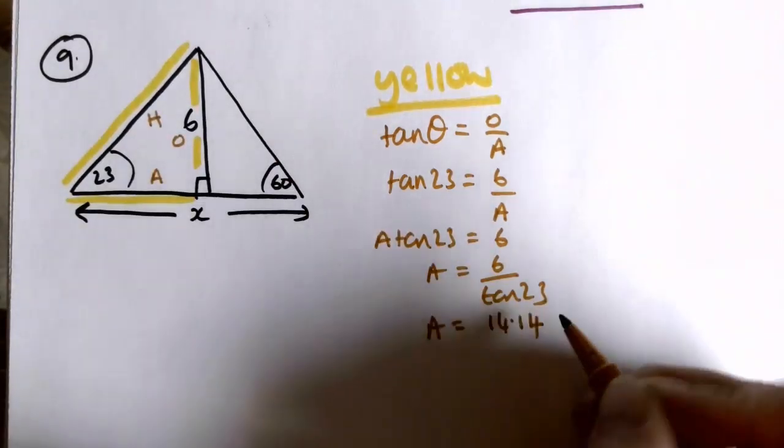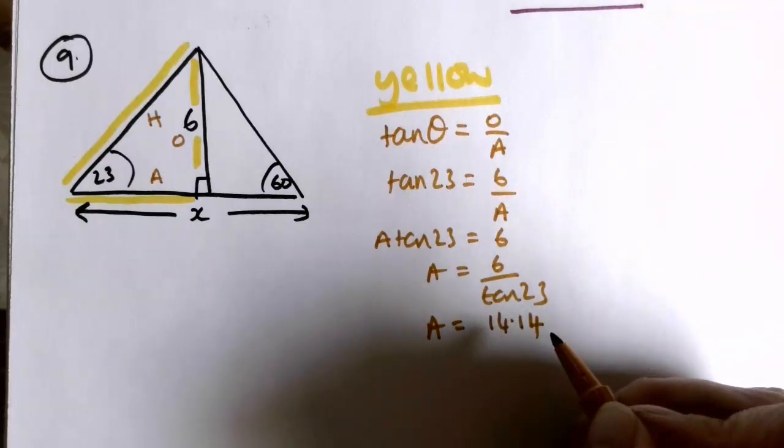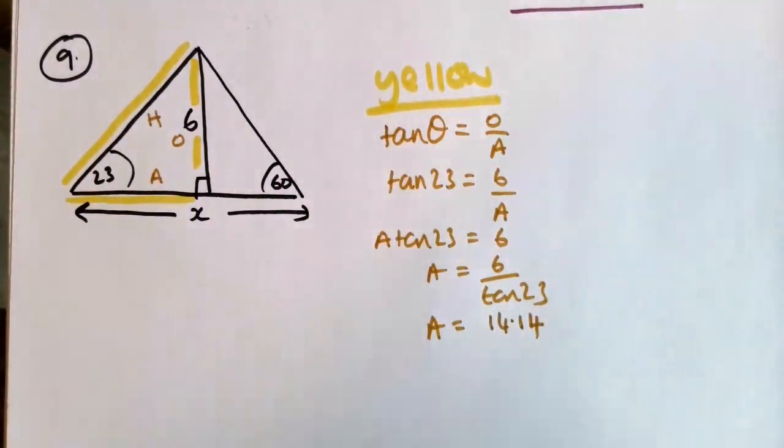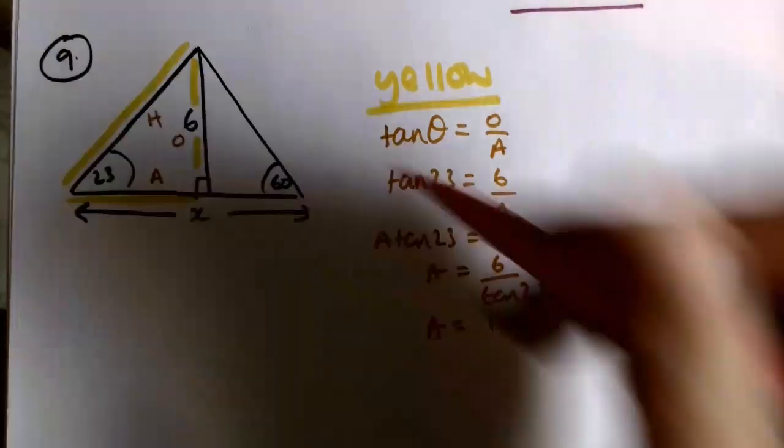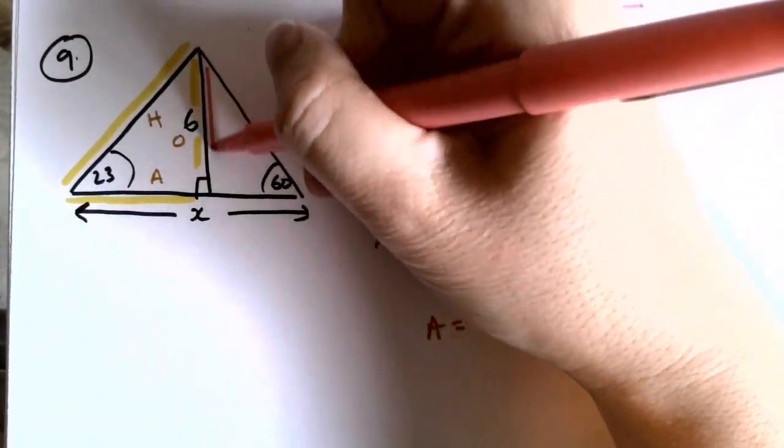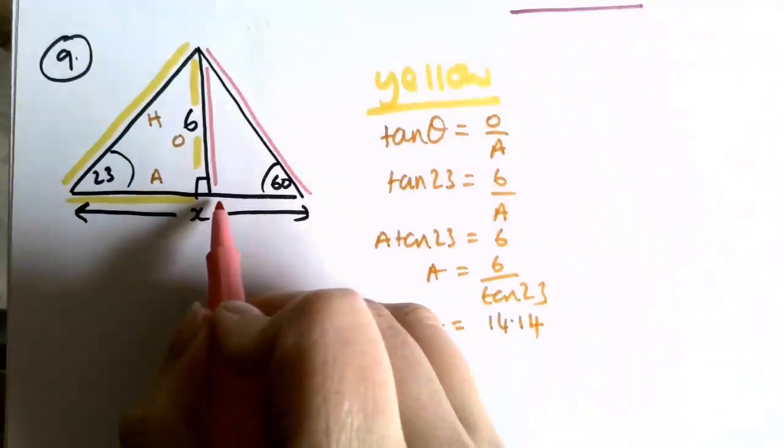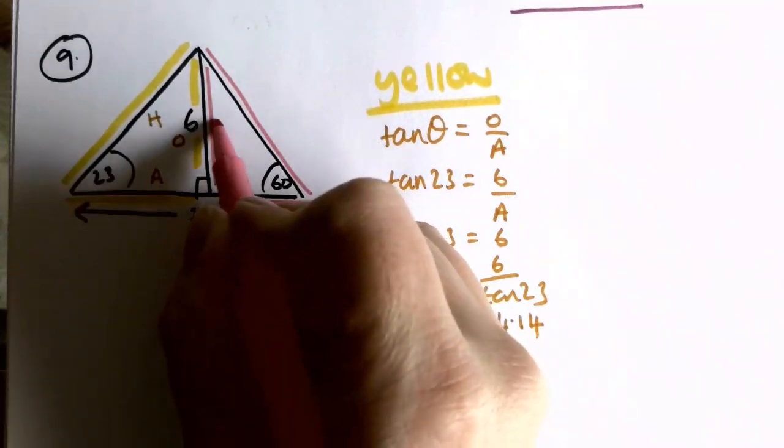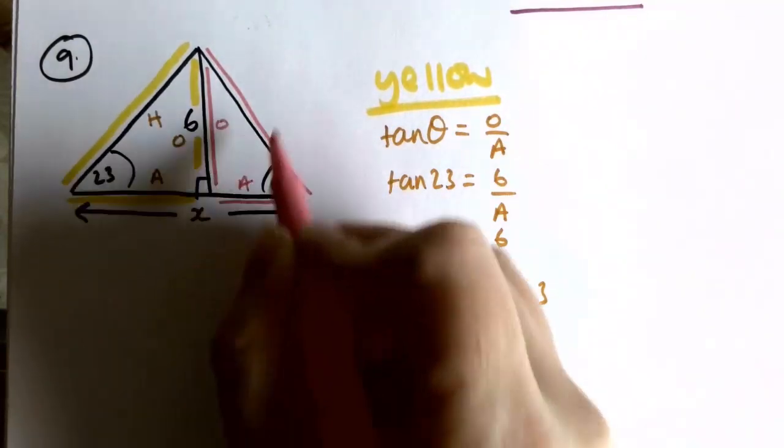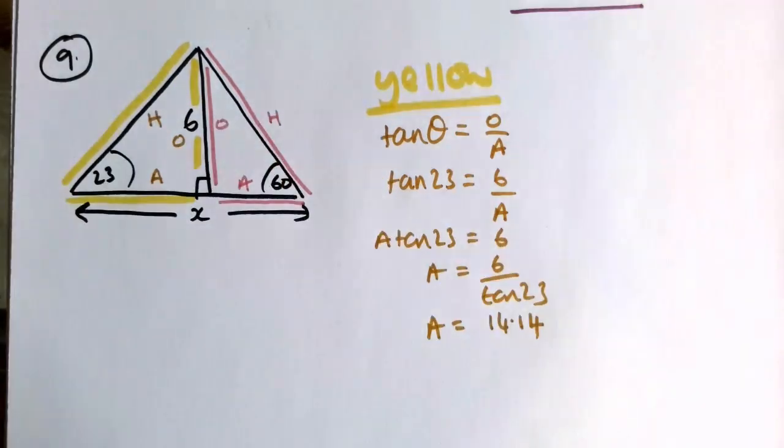Which seems sensible enough, okay. So let's do another one and do a pink triangle. So this triangle here, 6 is the opposite, again we're trying to find the adjacent, we don't care about the hypotenuse in this one.